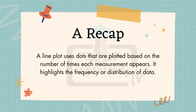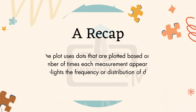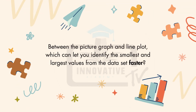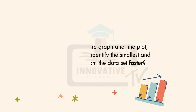A recap: a line plot uses dots that are plotted based on the number of times each measurement appears. It highlights the frequency or distribution of data, and between the picture graph and line plot, it can let you identify the smallest and largest values from the data set faster.